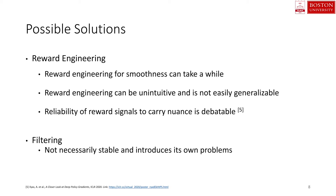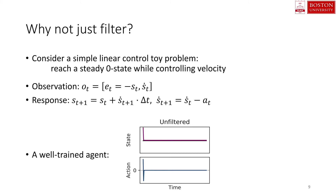Filtering, on the other hand, can lead to control instability with RL, as we will discuss in the following slides. We start by considering a simple toy problem. We want the RL controller to drive the state, here pictured in purple, to zero and keep it there, while controlling the system velocity. The controller observes the error between the zero state and the current state — that is, the negative of the current state — as well as the velocity. The input response is the current state plus velocity times delta t, where the velocity is adjusted by the controller. For a well-trained agent, this is a problem that can be solved near perfectly. The controller adjusts the system velocity to initially quickly drive the state near zero, and then slows down to stay close to the zero state.